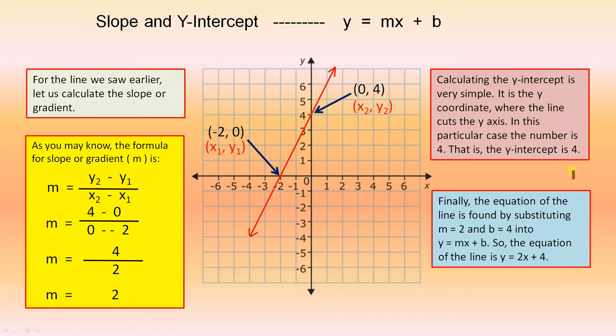Finally, the equation of the line is found by substituting m equals two and b equals four into y equals mx plus b. So the equation of the line is y equals two x plus four. See here? We put two for the m and we put four for the b. And that is the equation of this red line.